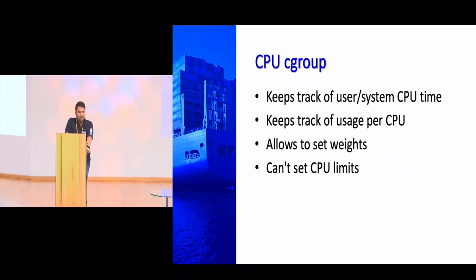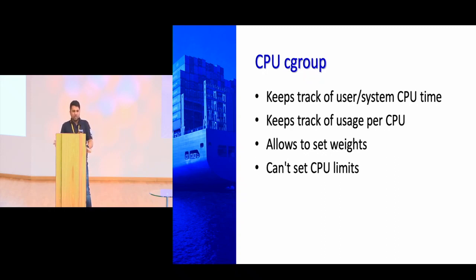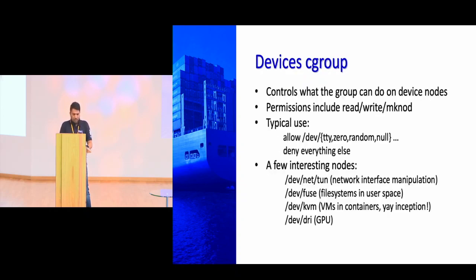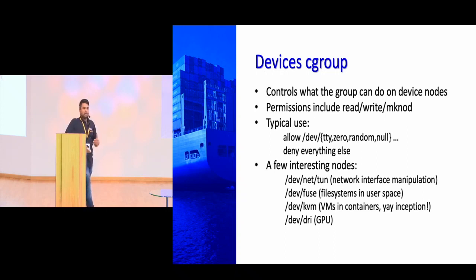The CPU cgroup helps track how much CPU time, threads, or processes are used by a particular process. You can set weights — you can say this process can use this much CPU — but you can't hard-limit it directly. The device cgroup gives control over what devices on the underlying system can be used by the container — like /dev/random, /dev/null for generating entropy, or GPU nodes. Under /dev we have all devices — disks, USB, printers, and so on. The device cgroup allows sharing those underlying devices with a container. Namespaces, as introduced earlier, provide the isolation mechanism.